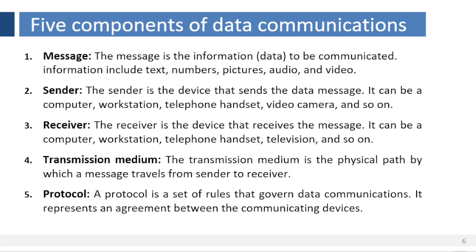Third, receiver — the receiver is the device that receives the message. It can be a computer, workstation, telephone handset, television, and so on. Fourth, transmission medium — the transmission medium is the physical path by which a message travels from sender to receiver. Some examples include twisted pair wire, coaxial cable, fiber optic cable, and radio waves. Fifth, protocol — a protocol is a set of rules that govern data communications. It represents an agreement between the communicating devices. Without a protocol, two devices may be connected but not communicating, just as a person speaking French cannot be understood by a person who speaks only Japanese.